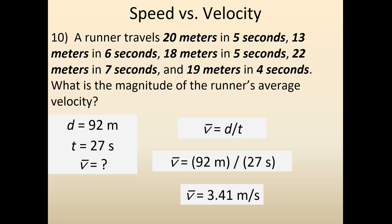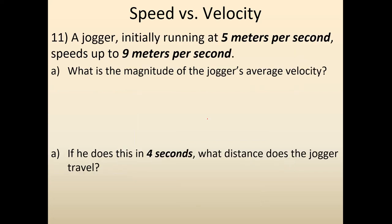For finding average velocity, use V-bar = d/t as your default. The equation V-bar = (VF + VI)/2 only works when you have exactly two velocities — specifically one initial and one final. If you have more than two velocities, you're not going to use the add-and-divide approach. So use d/t first; if that doesn't work, then try (VF + VI)/2.